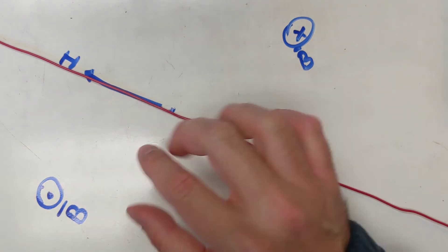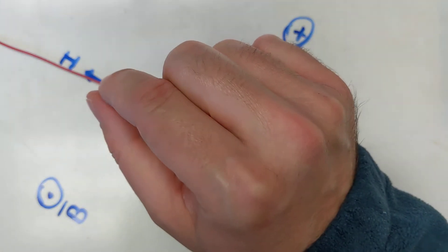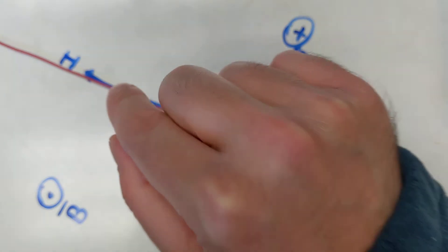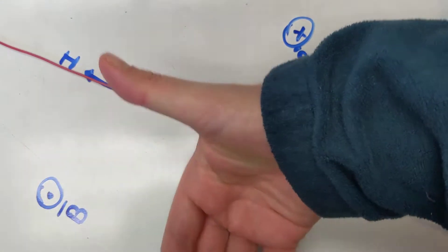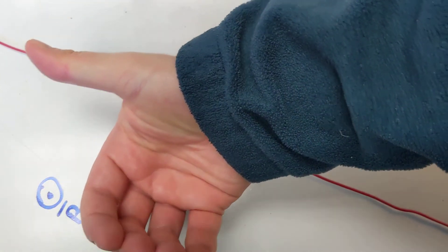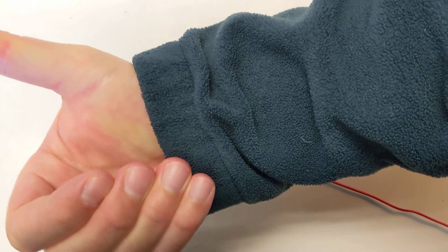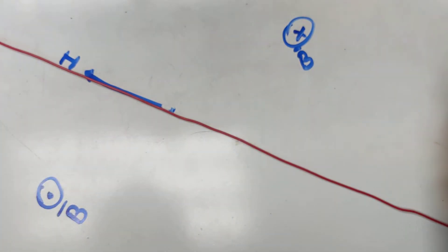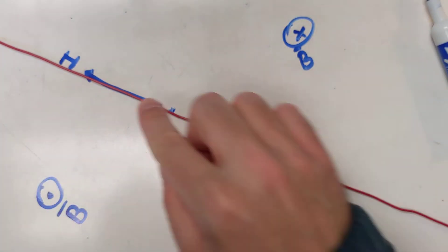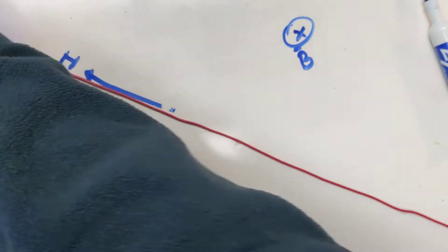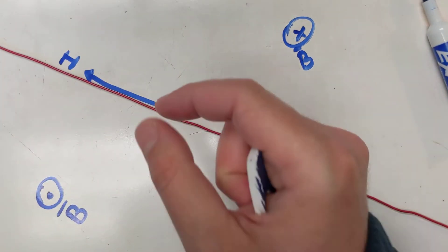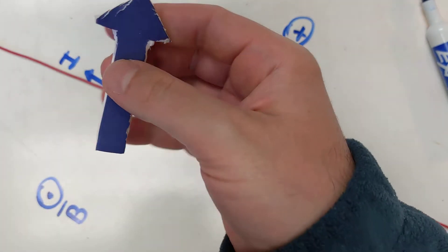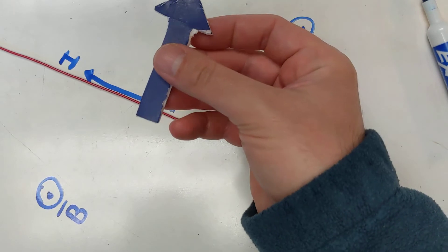Now what is the magnetic field somewhere here that is simply just higher above the wire? If I do this, then at that point my fingers are pointing in that direction. So somewhere here — which is higher than the wire — the magnetic field goes that way.